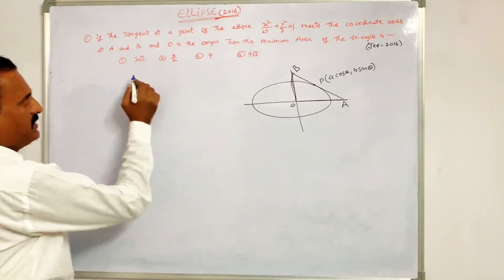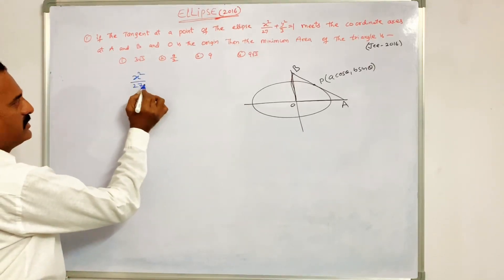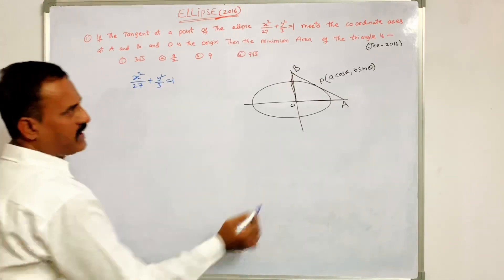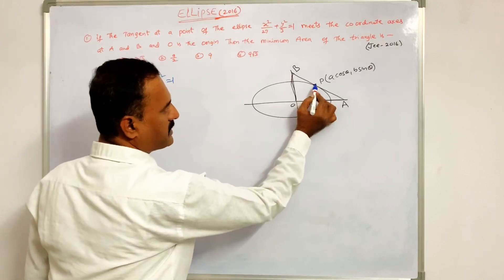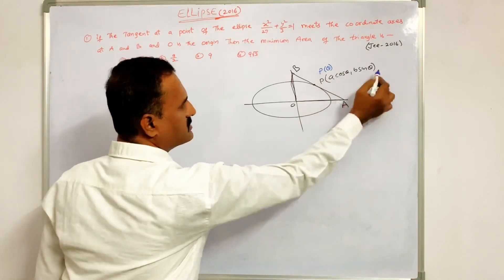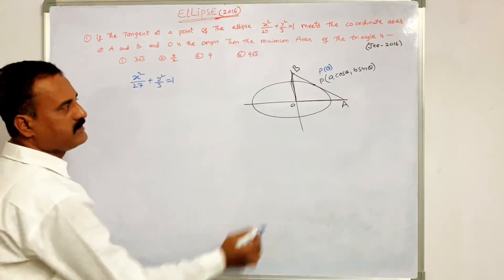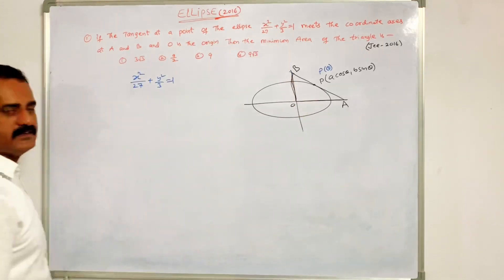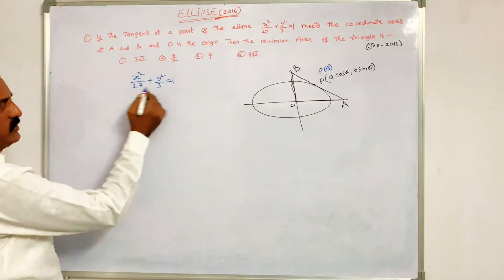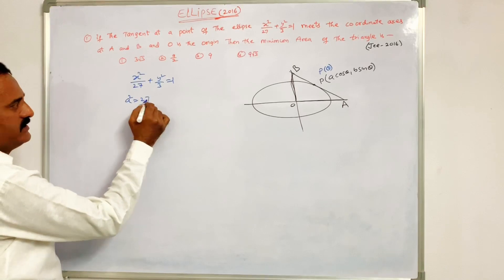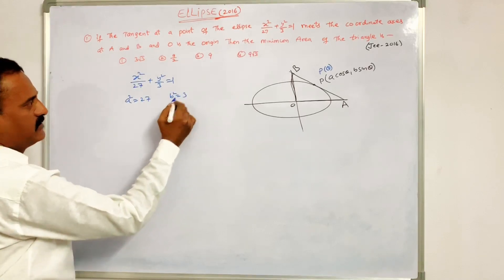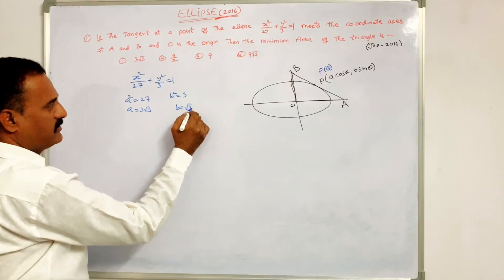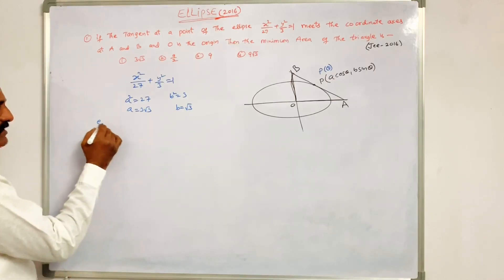Here is the given ellipse equation: x²/27 + y²/3 = 1. The tangent equation at point P(θ), where P(θ) = (A cosθ, B sinθ). This tangent line cuts the x-axis at capital A and the y-axis at capital B. So the value of A² = 27 and B² = 3.